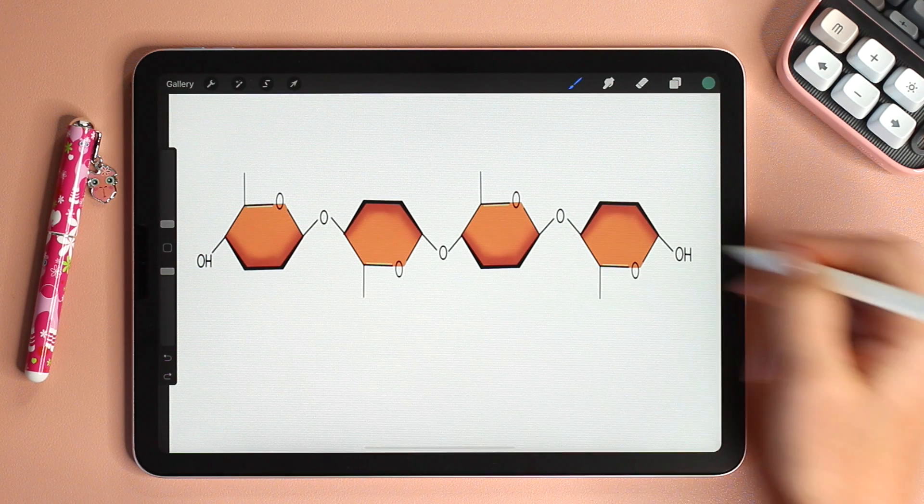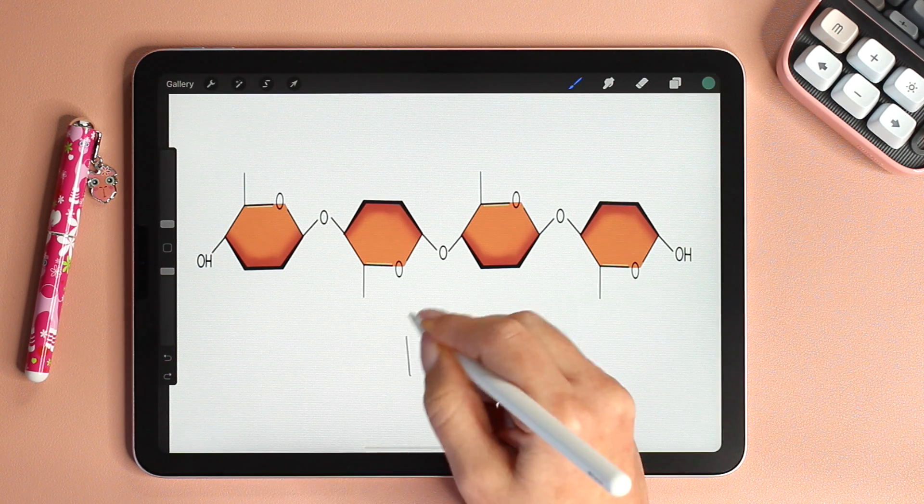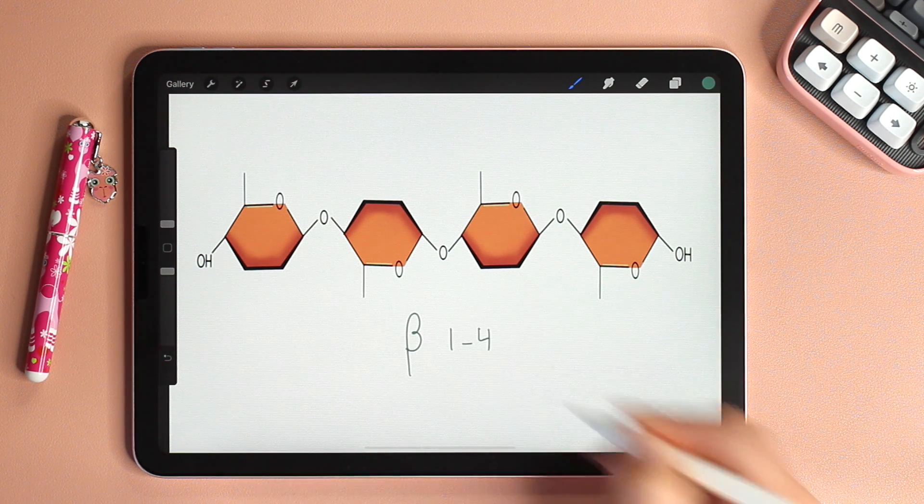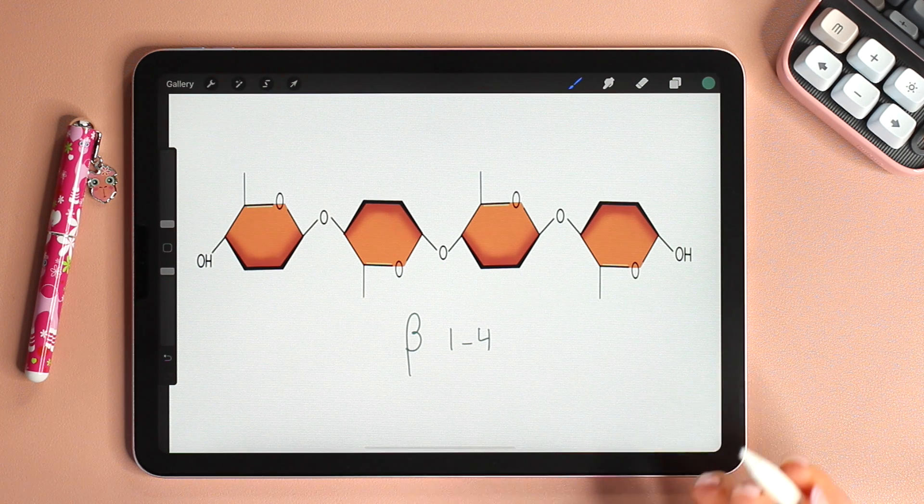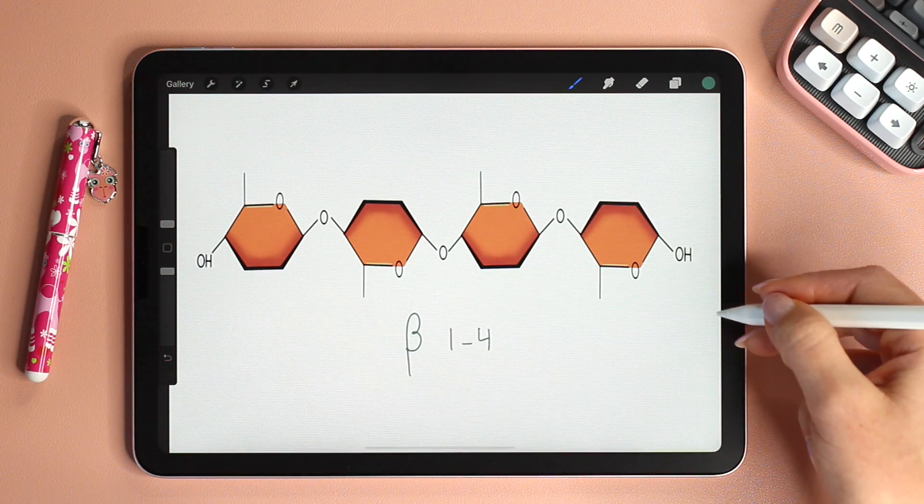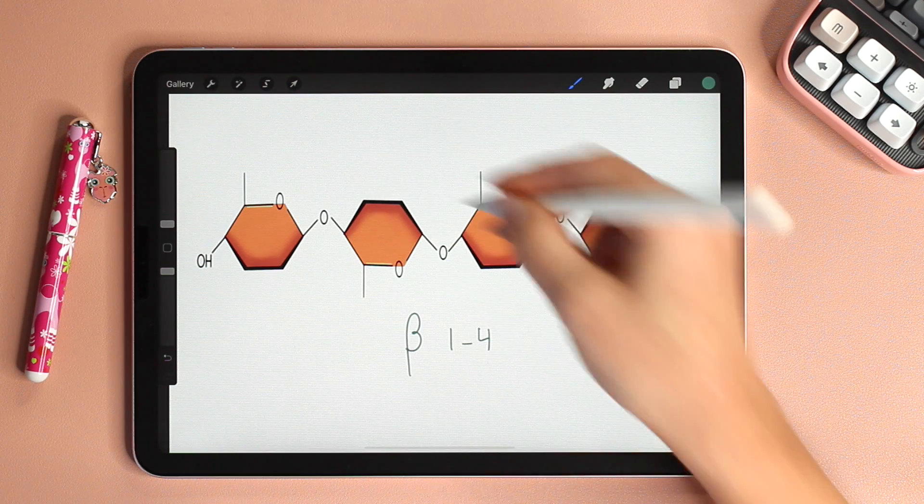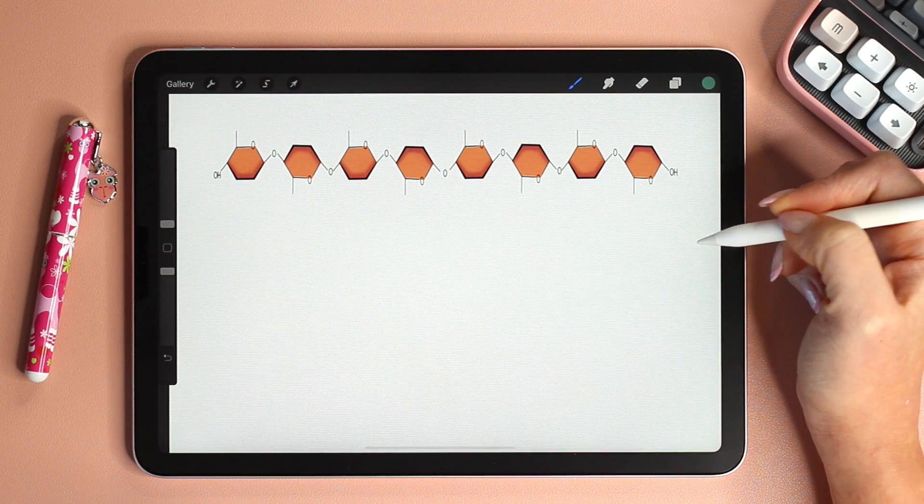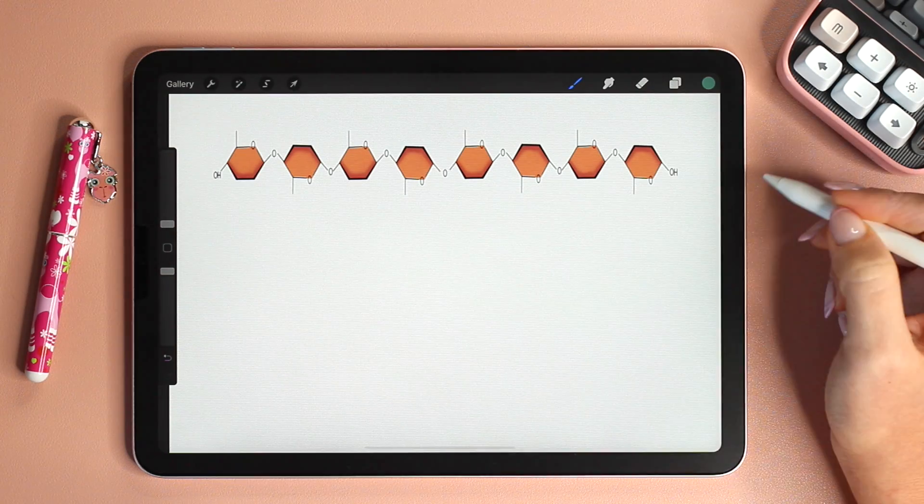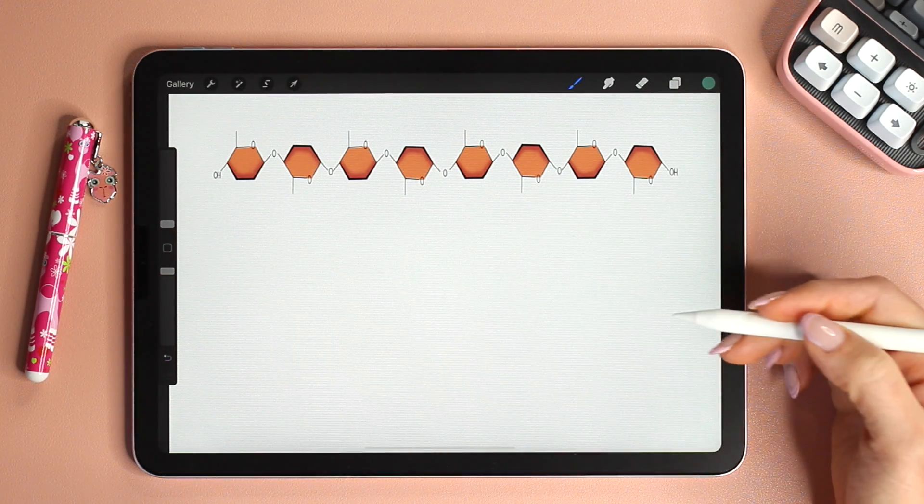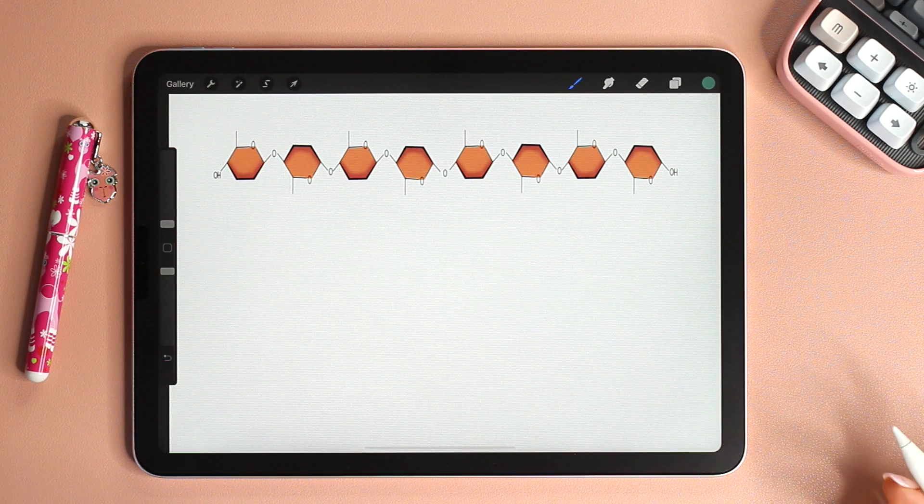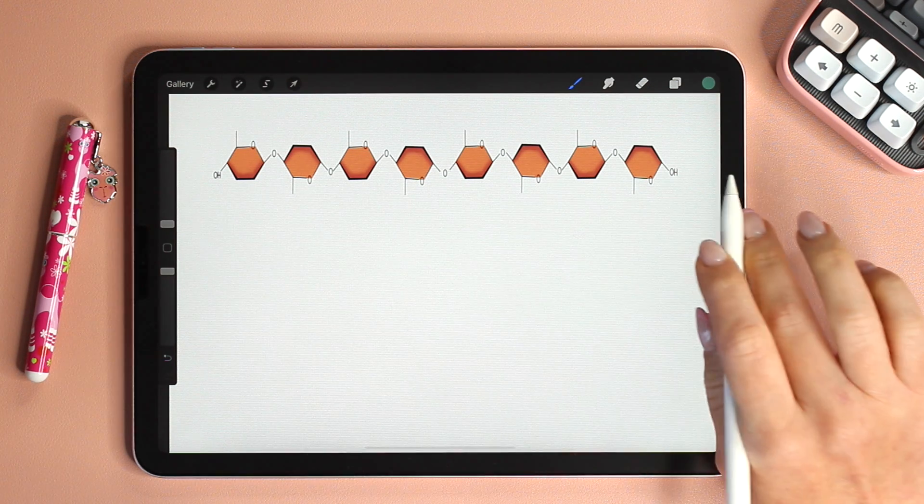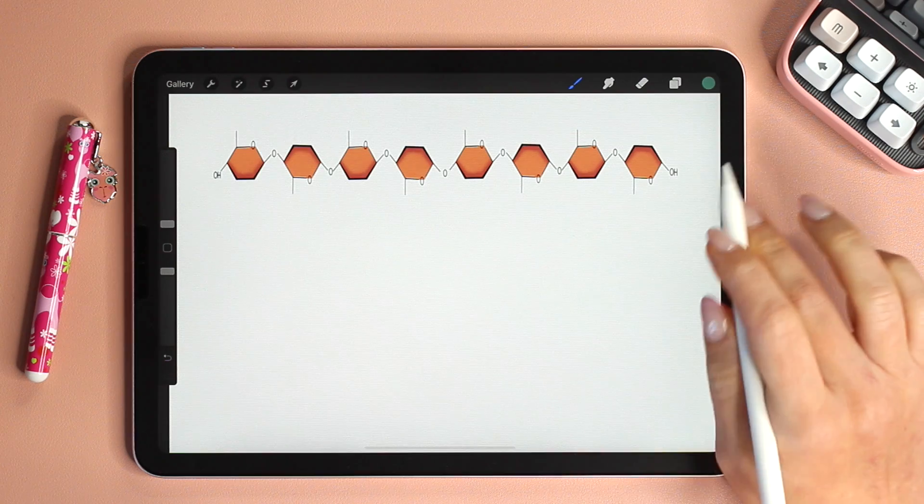The bonds in cellulose are referred to as beta 1,4 glycosidic linkages. Again the reason being that these are beta glucose molecules and the linkages are between carbon number 1 and carbon number 4. And once the polymer is large enough they do not form helical structures like glycogen and starch. Rather they remain straight and they are never branched.